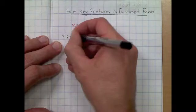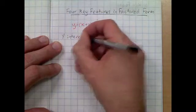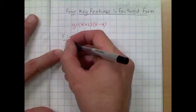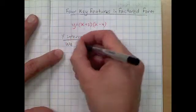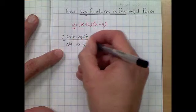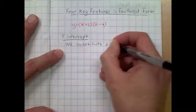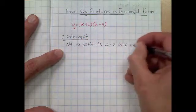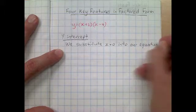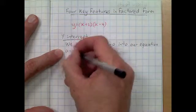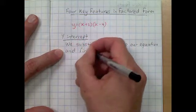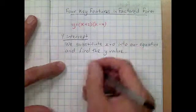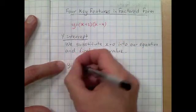Our first feature is the y-intercept. To find the y-intercept we simply substitute the x value of 0 into our function, and that's going to allow us to find the corresponding y-value. It's a nice simple way of finding the y-intercept for all functions.